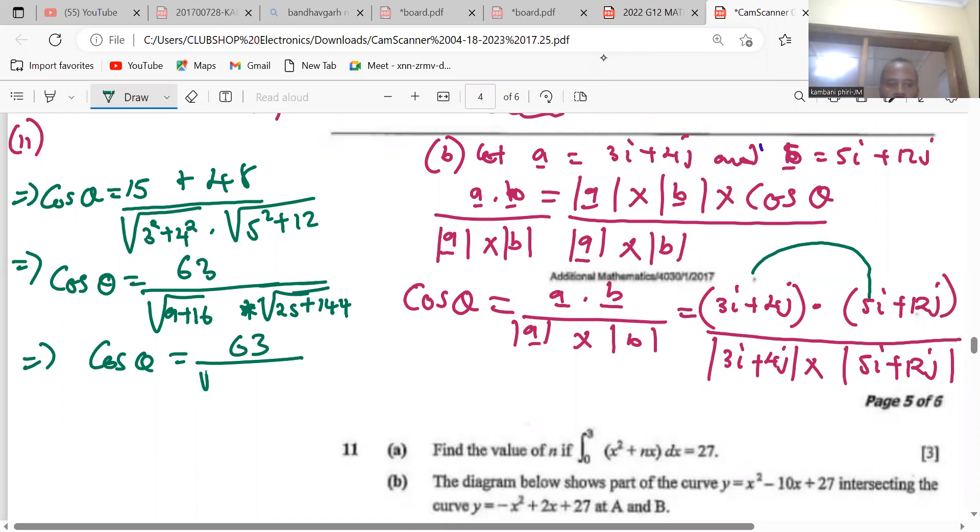This implies that you have got cos θ is equal to 63 divided by the root of 25 by the root of 169. So this is 63 divided by 5 times 13. So this will imply that cos θ is equal to 63 divided by 65.